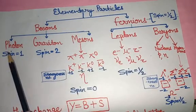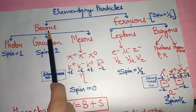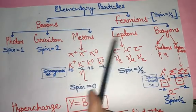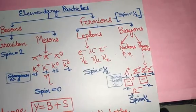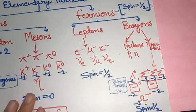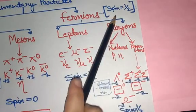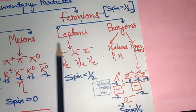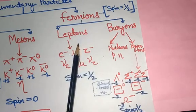The second main category is fermions. Fermions are leptons and baryons. All fermions have spin one-half.